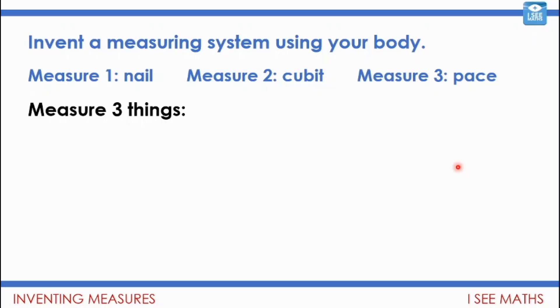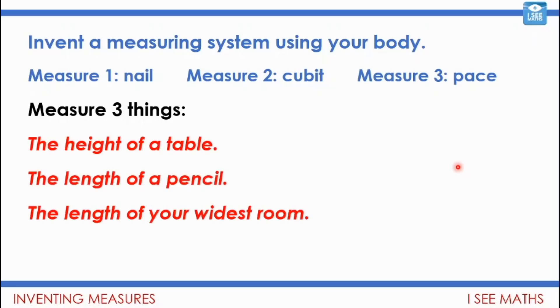Now, here's the three things that I want you to go off now and measure. The height of a table, to any table, its height, and think which measure are you going to measure that in? Will you measure in nails or cubits or paces or which of your measures will you use to measure with? The length of a pencil and the length of your widest room, whether you're doing this in a school or in your house, the widest room that you have. So go off and do that, write it down, think about which measurement are you going to use, pause the video and have a go at that.